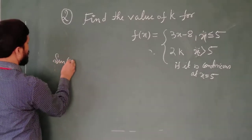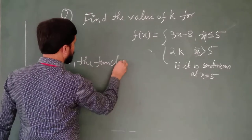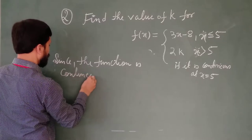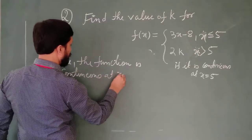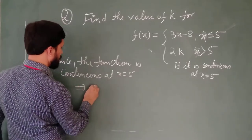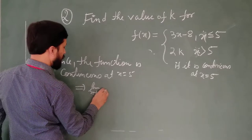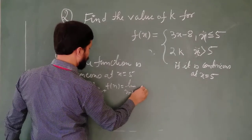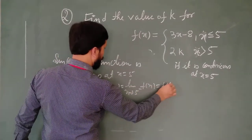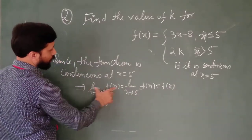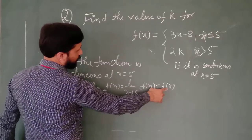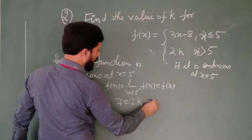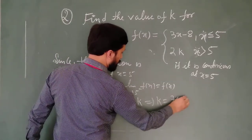Since the function is continuous at x equal to 5, this implies: limit x tends to 5 plus f(x) equals limit x tends to 5 minus f(x) equals f(5). The value we got was 7, so 7 equals 2k. This implies k equals 7 by 2, that is 3.5.